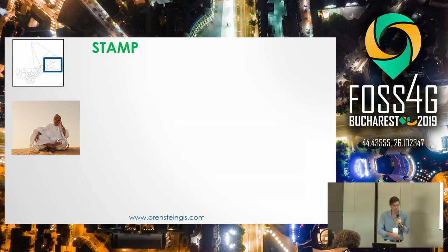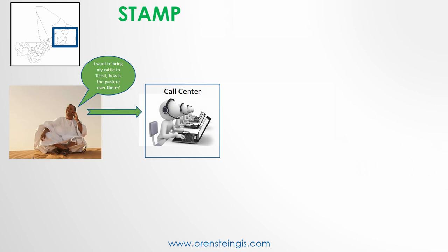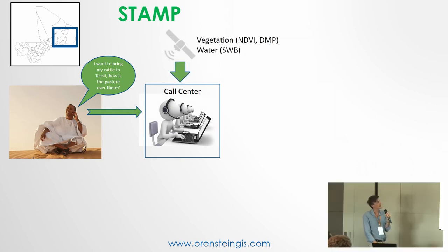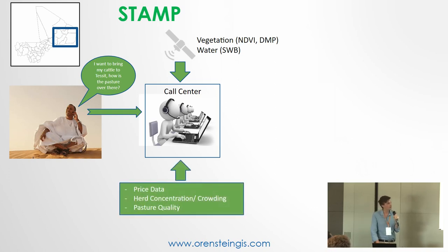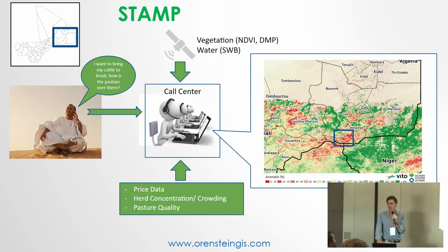Here's the basic logic of how it works. The herder in Gao — the northern part of Mali where the project is taking place — decides he wants to bring his animals to Tessit, a village south of the river Niger in Mali. Normally he could try to find cousins or friends there, or send someone on a motorcycle, which can be very costly and time consuming. So instead, he calls the STAMP call centre. They get imagery, some field data on prices and herd concentration, and the agent receiving the call loads up the interface. He sees a big red splotch over Tessit and tells the pastoralist it's not so great — maybe don't go to Tessit.